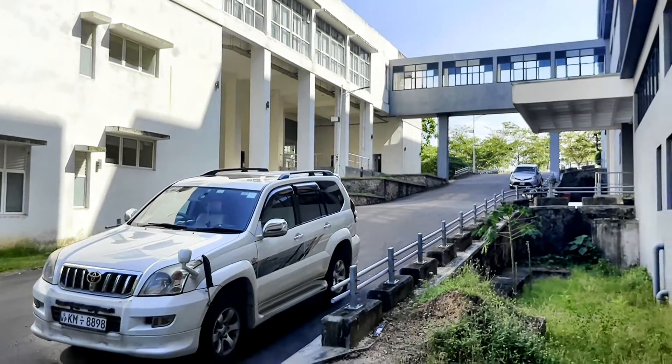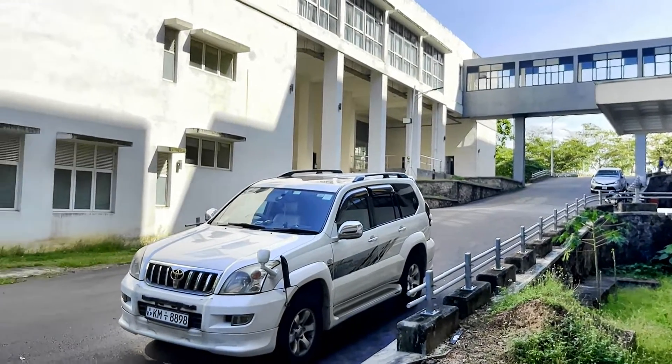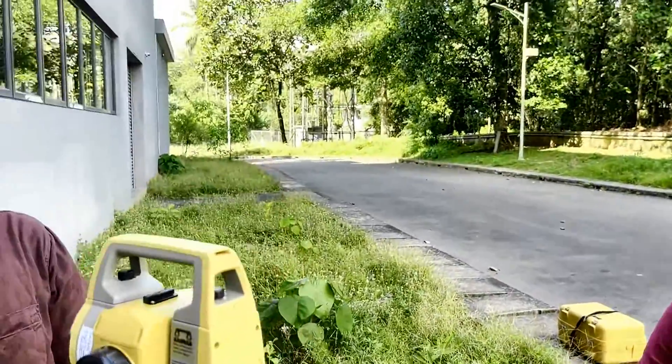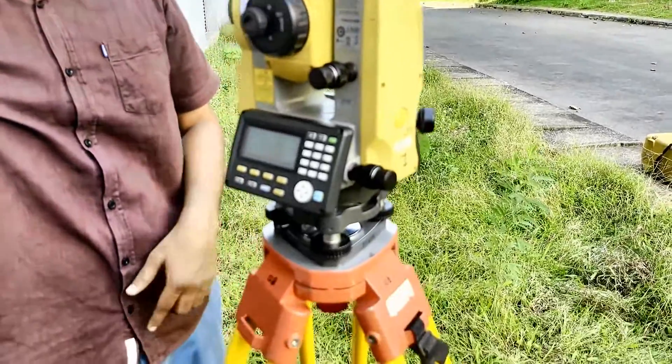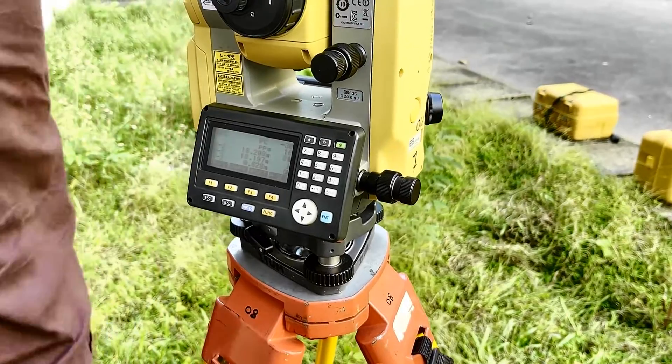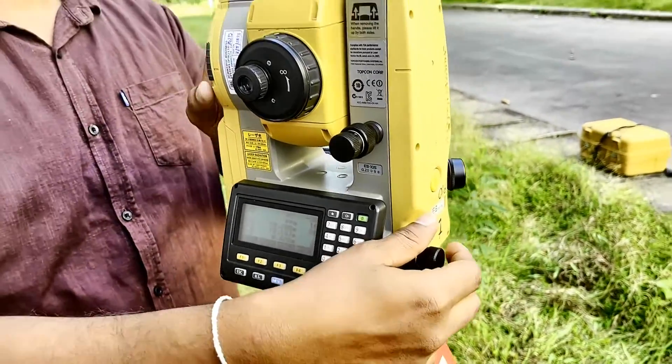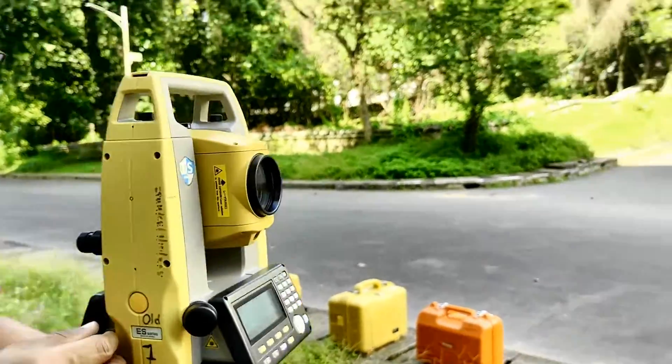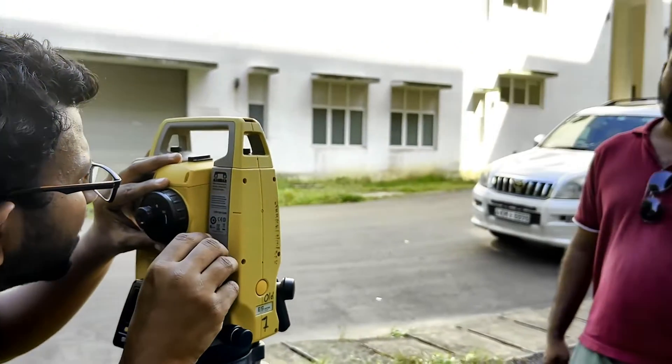So this is how we are doing. Now, I am going to measure the clockwise angle between 9010 to 9012 from 9011. So the instrument has been set up above the 9011. So we are going to measure the clockwise angle to that part of the instrument. So first, I need to make it face left like this and then I am targeting the prism.